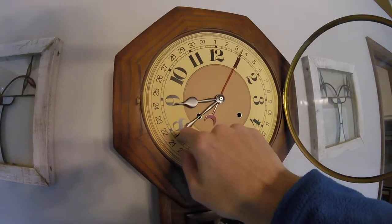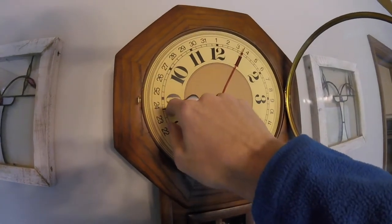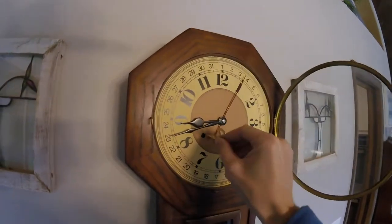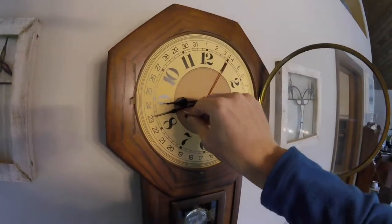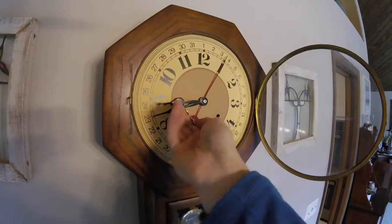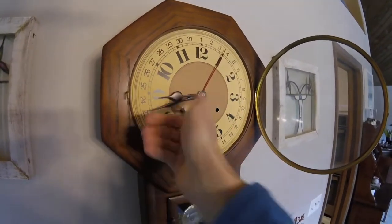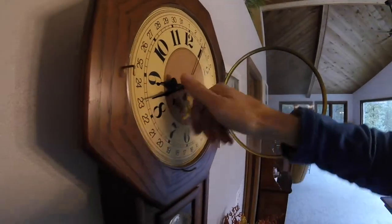Once we have the approximate time set, we now will place the clock key into the left side winding hole. We'll turn the key clockwise until we meet resistance. We should be able to feel when the clock winds up completely. We want to be careful not to overwind it as this can damage the spring mechanism.